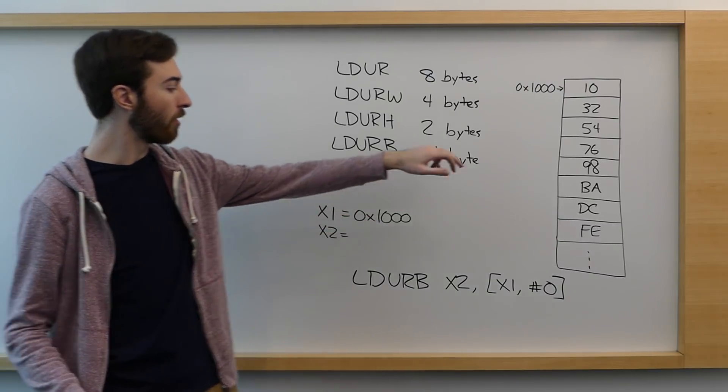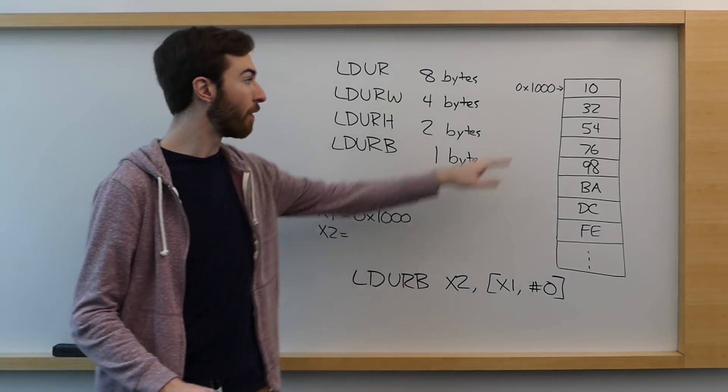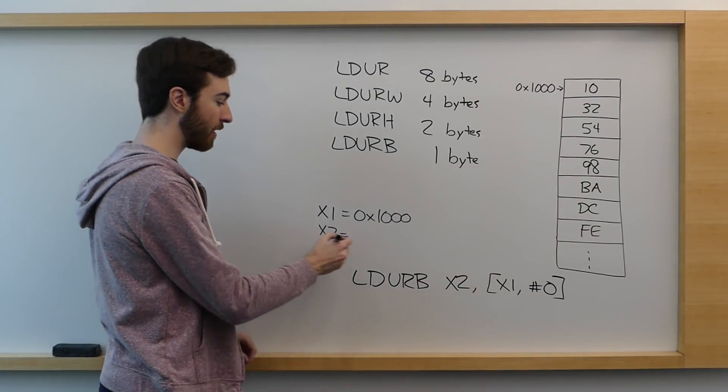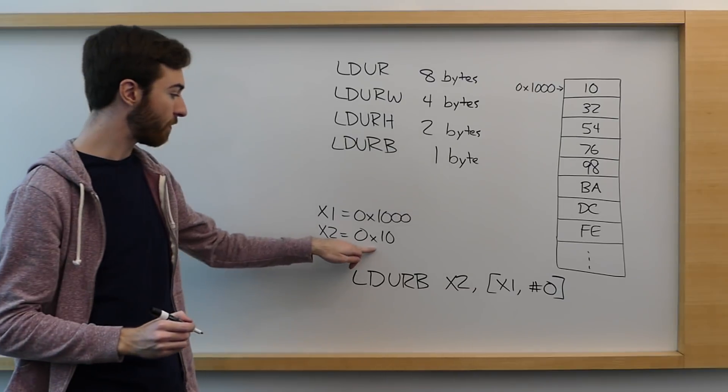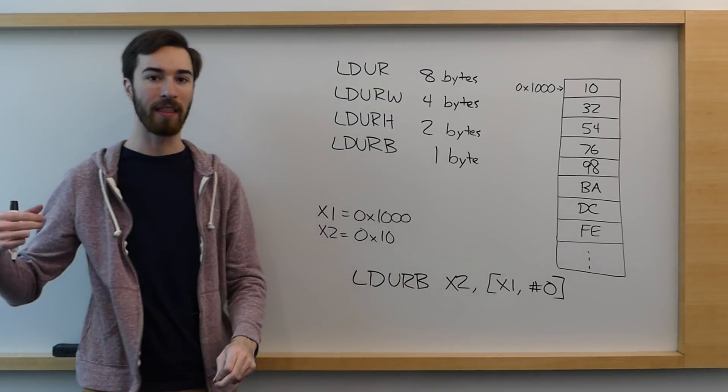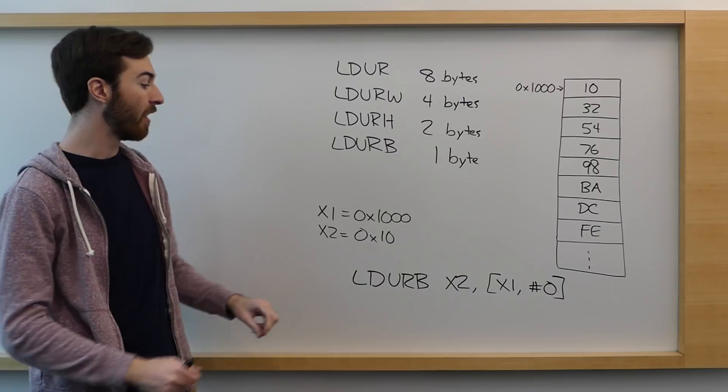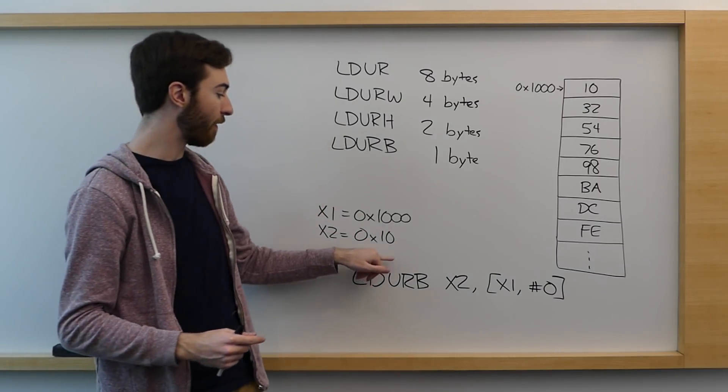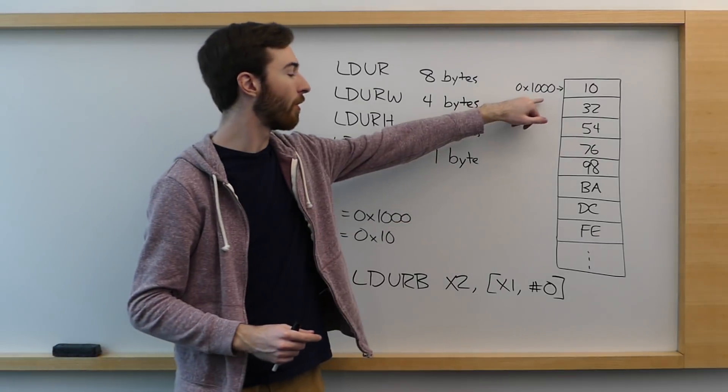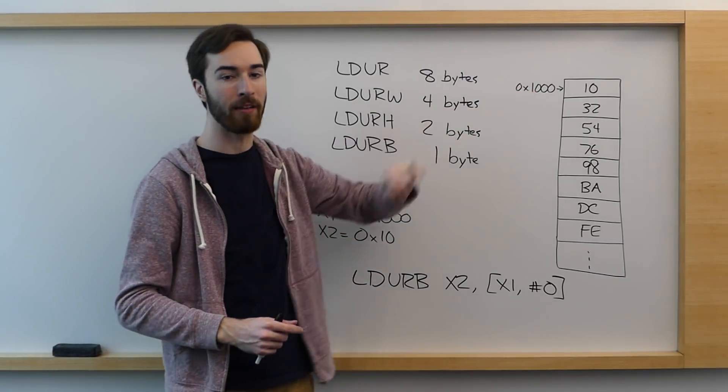So in this case, since we're loading a single byte from this address of memory, X2 will become just 0x10, and you can always imagine that it fills in leading zeros as much as it needs to. It will overwrite the entire register, but it will only fill the least significant byte with the byte that it reads from memory.